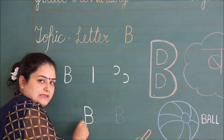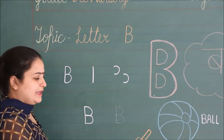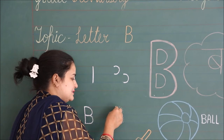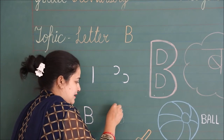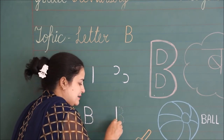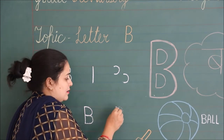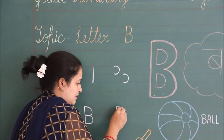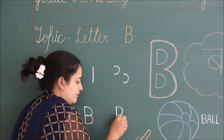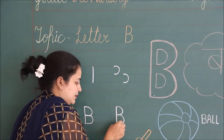Then make another curve from the second line to the third line, touching the standing line. Make a standing line, then a curve, and one more curve.